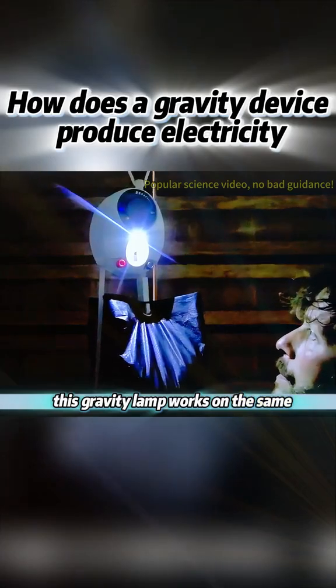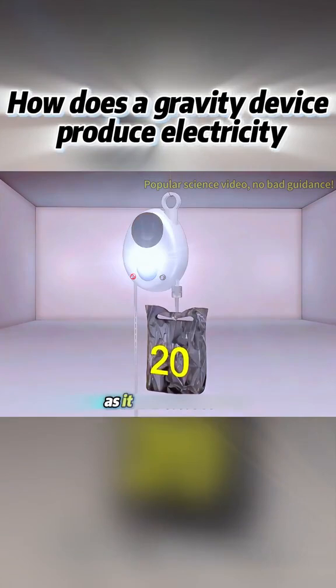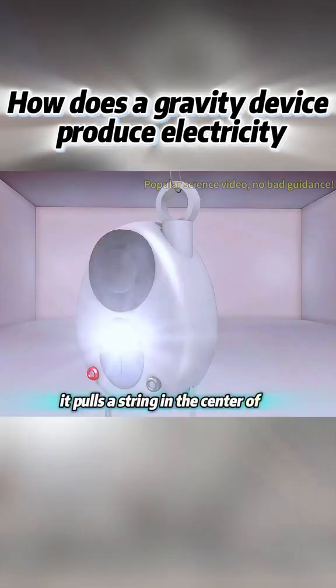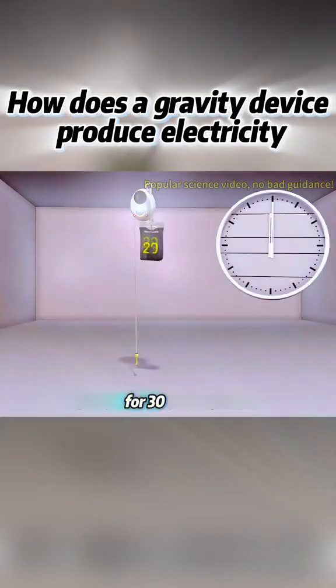This gravity lamp works on the same principle. You just need to hang a weight next to the lamp. As it slowly descends, it pulls a string in the center of the lamp, activating a generator that produces enough electricity to light the lamp for 30 minutes.